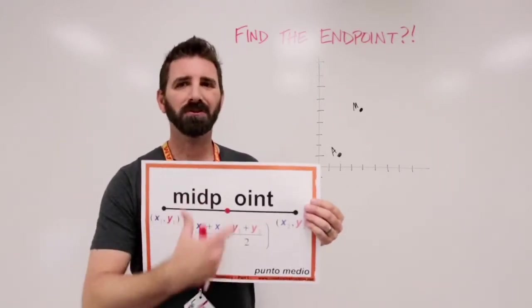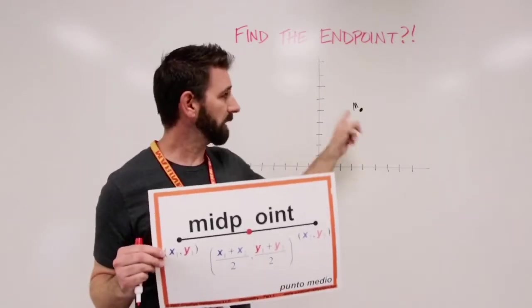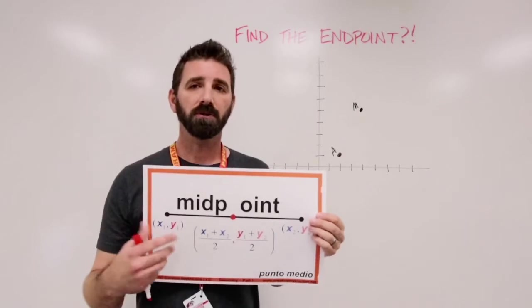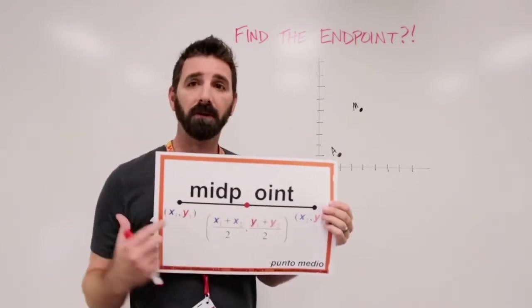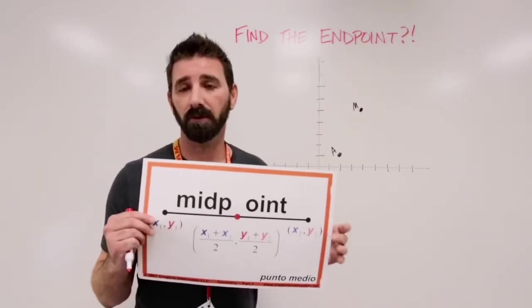First of all, we already have the answer to the midpoint formula because we have the coordinates of the midpoint. We can look on the graph here and we can see the coordinates of the midpoint. So what that's going to have you do then is you're going to have to set up two equations in order to solve for an x and a y value that are missing, which are going to be the values of that other endpoint.